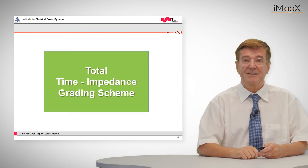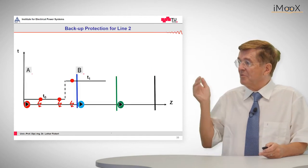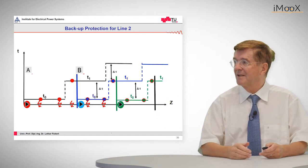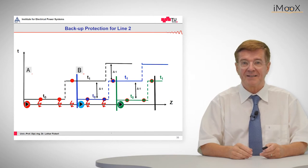So this is okay and now we can integrate this into a total time impedance grading scheme. So we have seen what happens for relay A for different fault positions. The same would happen for relay B and for relay C.